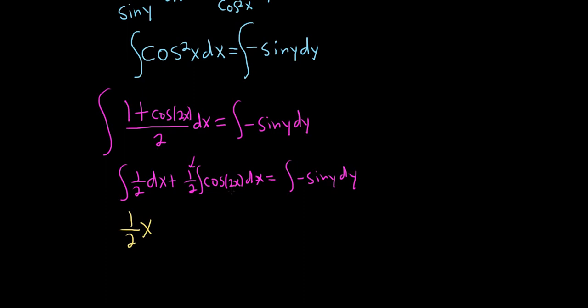So you ask yourself, what's a function whose derivative is cosine? Well, the derivative of sine is cosine. So when you integrate cosine, you get sine. So it'll be plus (1/2)sin(2x) and then you divide by 2.